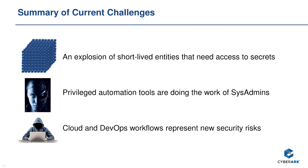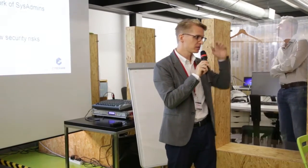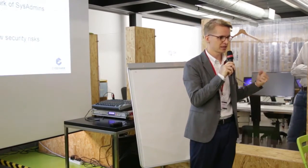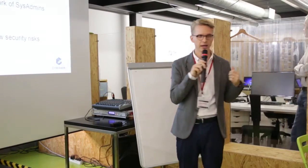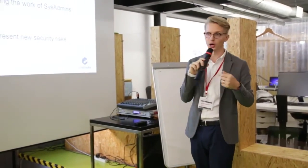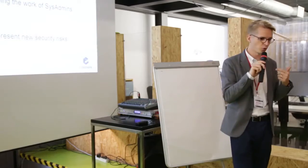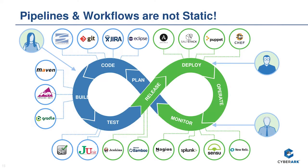To summarize the attack vectors: within the cloud we have an explosion of short-lived entities that all require keys, secrets, and identities to operate. We can't hard-code them in — as Vine showed, someone could steal that instance and recreate your entire environment. We have privileged automation tools doing the work of sysadmins, which are extremely powerful. Finally, the cloud and DevOps workflows themselves represent new risk — attackers can utilize these flows to distribute their own malware.